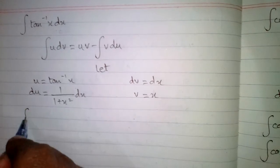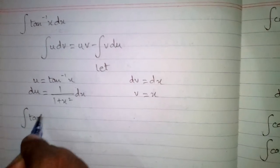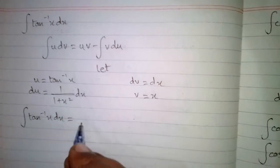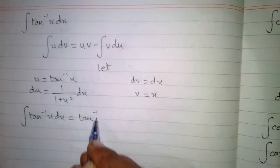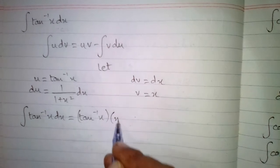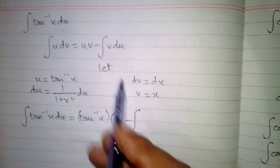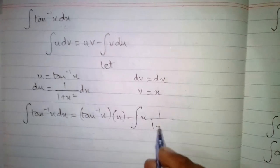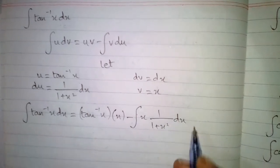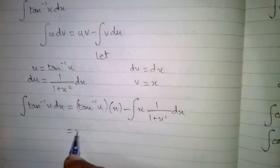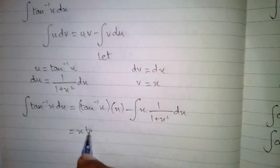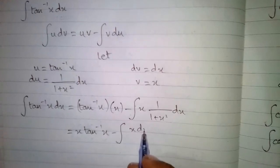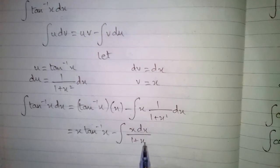The integral of tan inverse x with respect to x is uv, where u is tan inverse x and v is x, minus the integral of v du. Here v is x and du is 1 upon 1 plus x square dx. This can be written as x times tan inverse x minus the integral of x dx upon 1 plus x square.